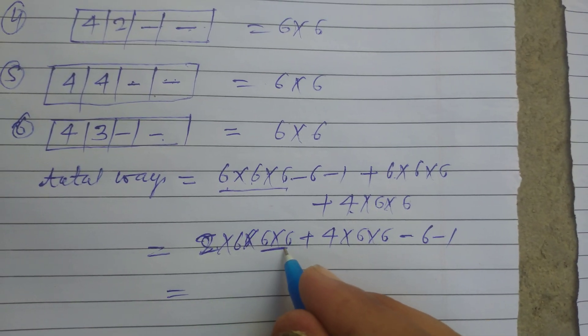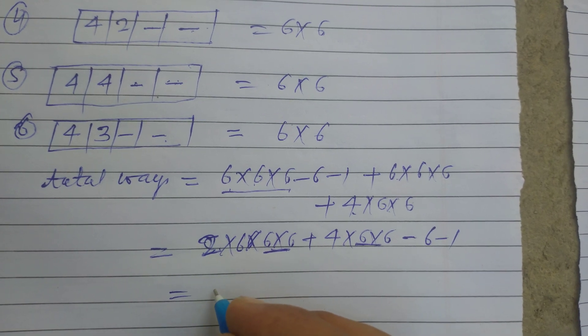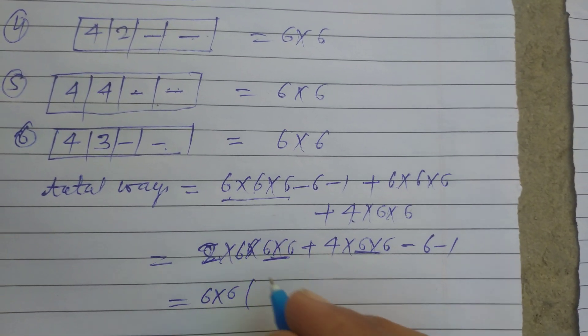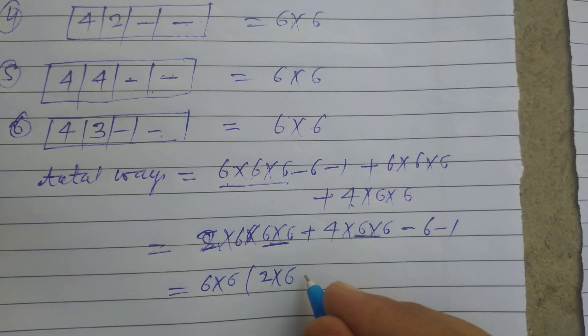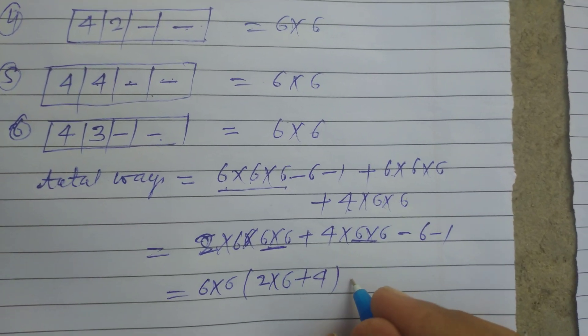So here we take common, 6 into 6 from this, 6 into 6, so 2 into 6, plus 4, minus 7.